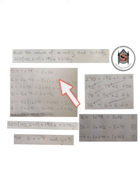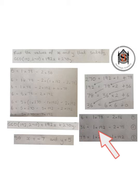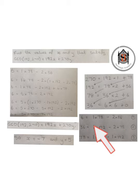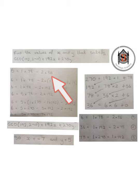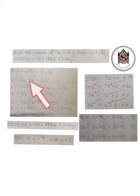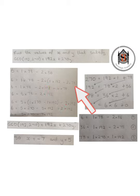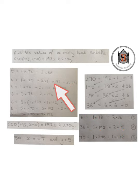Using equation number 2, we know that 36 equals 1 times 192 minus 2 times 78. We can substitute this into equation 1 in place of 36. Doing that gives: 6 equals 1 times 78 minus 2 times (1 lot of 192 minus 2 lots of 78).